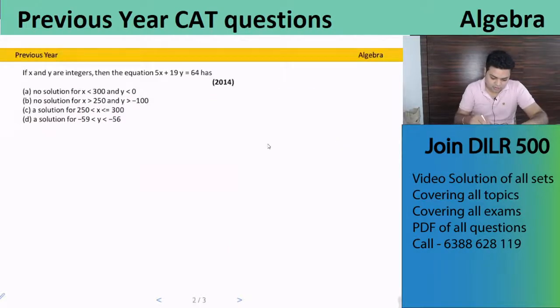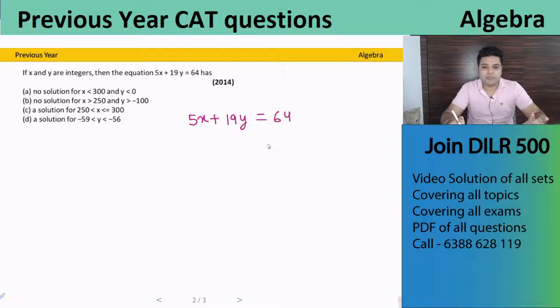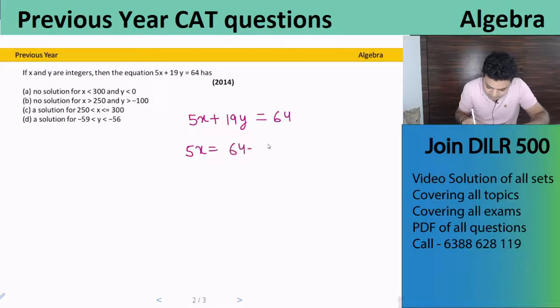Let's see this question. The question says x and y are integers, then the equation 5x plus 19y equals 64. Now this question has two variables in one equation. So we need to find the solution. What we do here is first write 5x equals 64 minus 19y. We put value for the variable with the larger coefficient. Since y's coefficient is larger, we start putting values there.